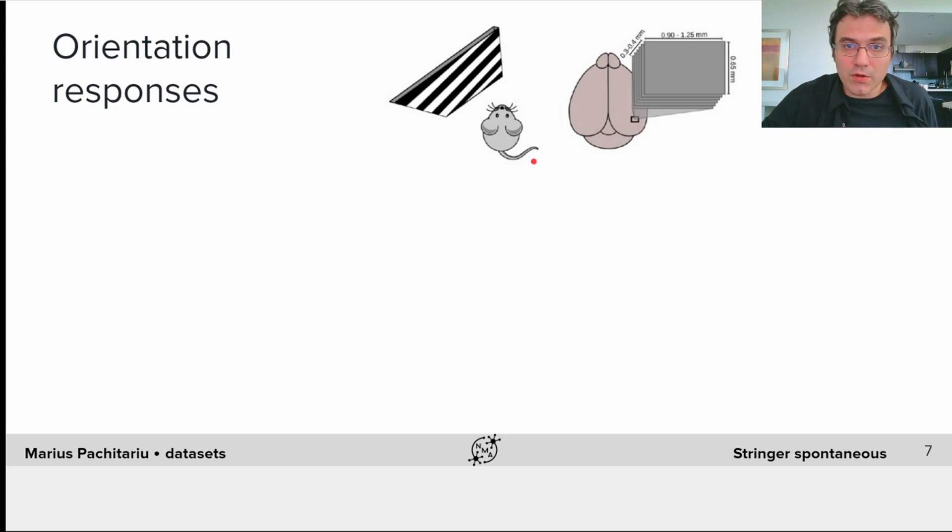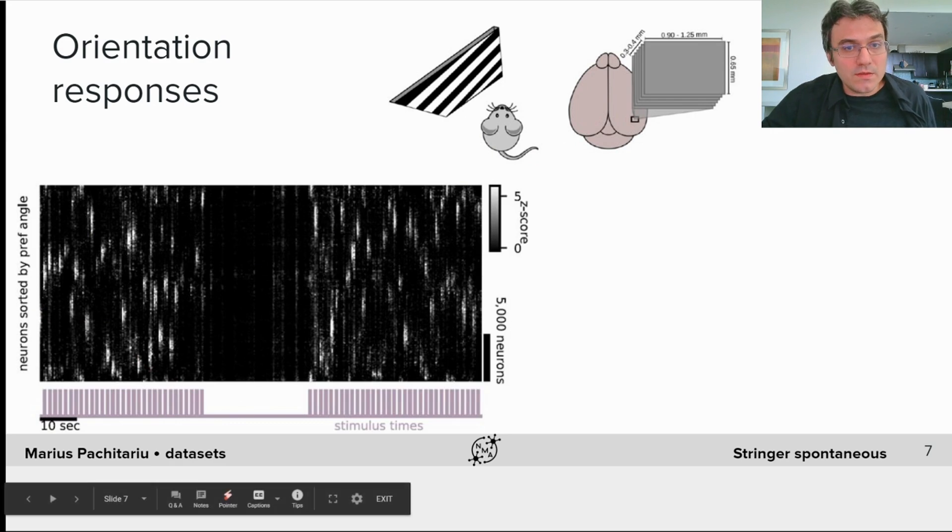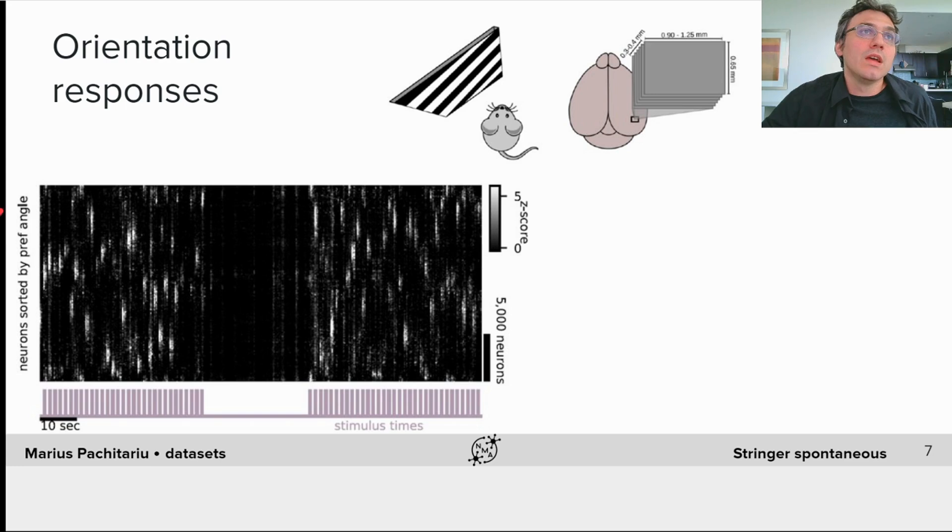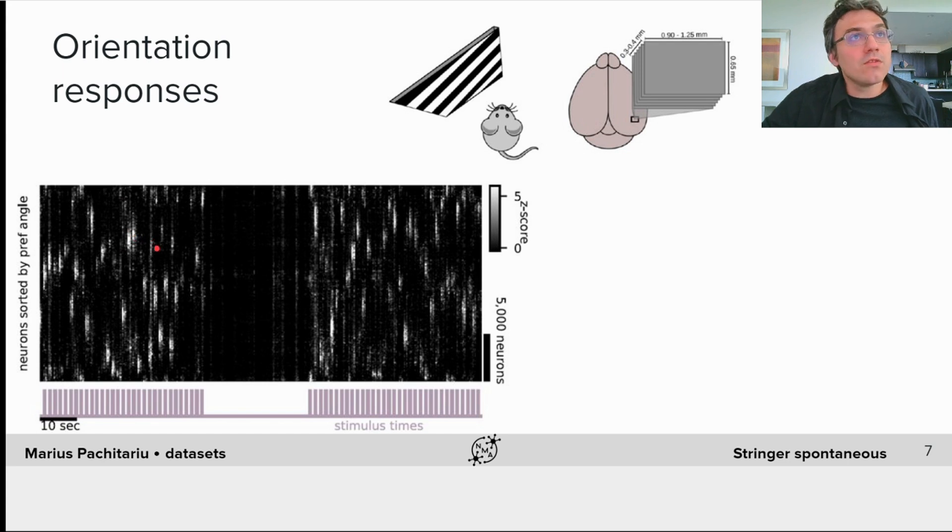The mice are not doing a task with these stimuli. They're just running on the air-floating ball and just doing mouse things, while we record even more neurons, in this case, about 20,000. You can see the neurons into another one of these RasterMap-style images, which we now sorted along the y-axis according to the preferred stimulus of each neuron. You can see on each stimulus presentation, there is a bump of neural activity in the neurons that preferred that particular stimulus.